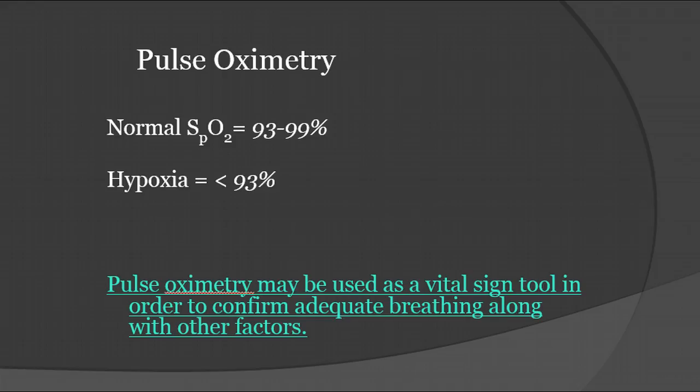Hypoxia begins at 93%. Remember pulse oximetry may be used as a vital sign tool in order to confirm adequate breathing along with other factors. It's a confirmatory mechanism, not necessarily a diagnostic mechanism. It's very important to know the distinction between diagnostic and confirmatory.